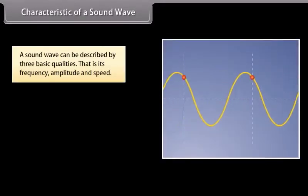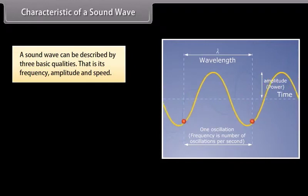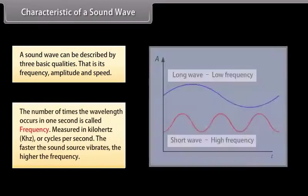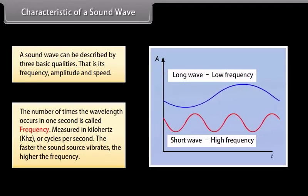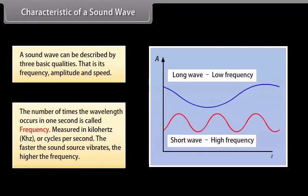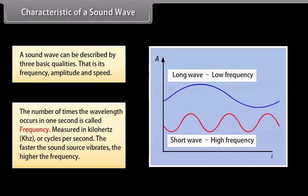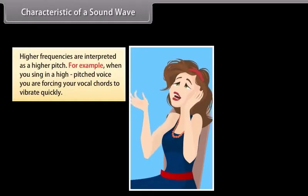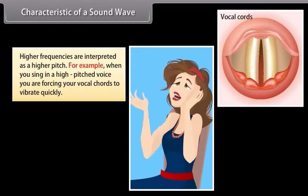Characteristics of a sound wave. A sound wave can be described by three basic qualities: its frequency, amplitude, and speed. The number of times the wavelength occurs in one second is called frequency. It is measured in kilohertz or cycles per second. The faster the sound source vibrates, the higher the frequency. Higher frequencies are interpreted as a higher pitch. For example, when you sing in a high pitched voice, you are forcing your vocal chords to vibrate quickly.